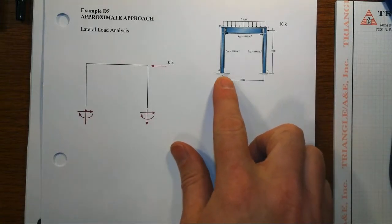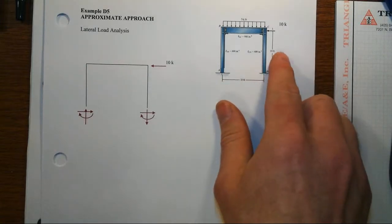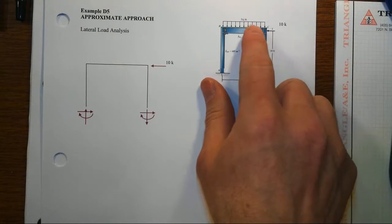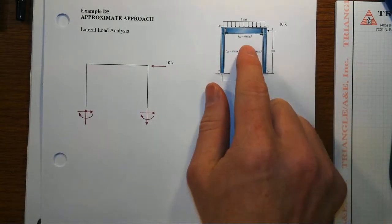In this example of a single story, single bay portal frame: 10 feet, 10 feet, 10 kip lateral load, 3 kip per foot gravity load.